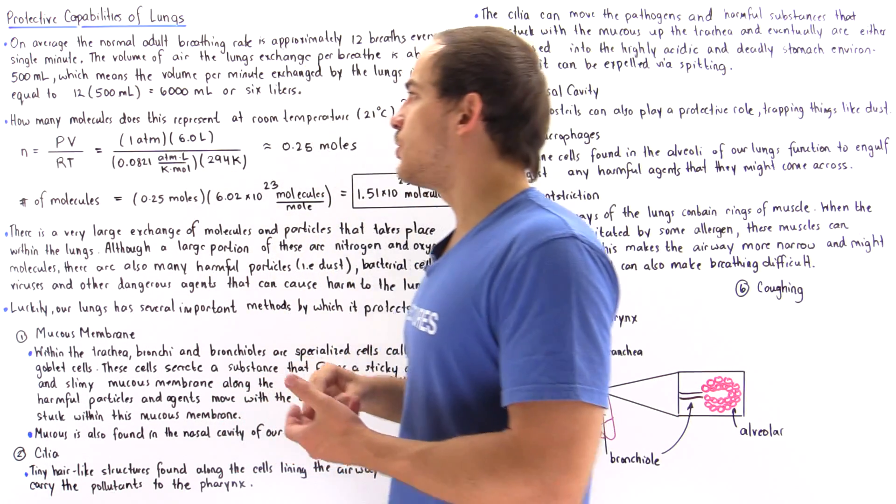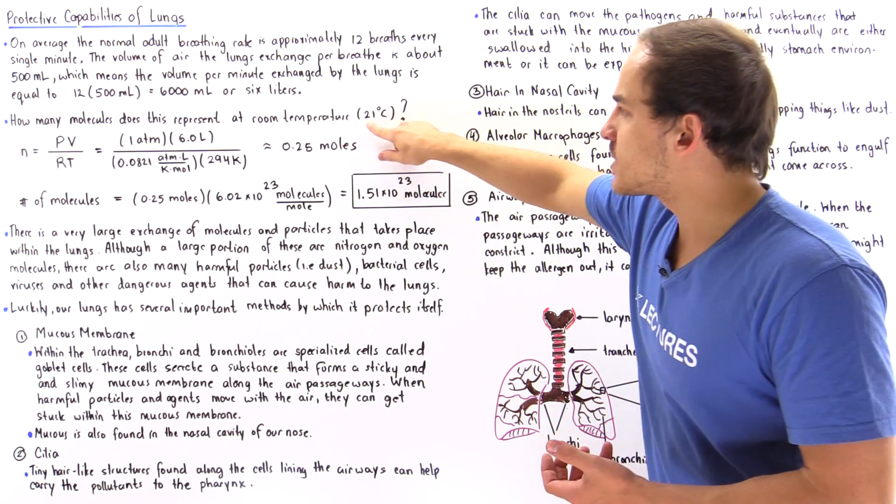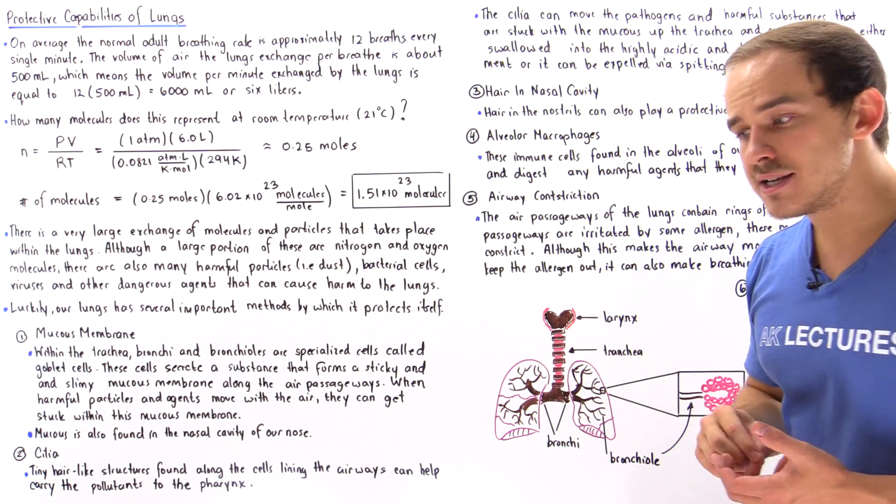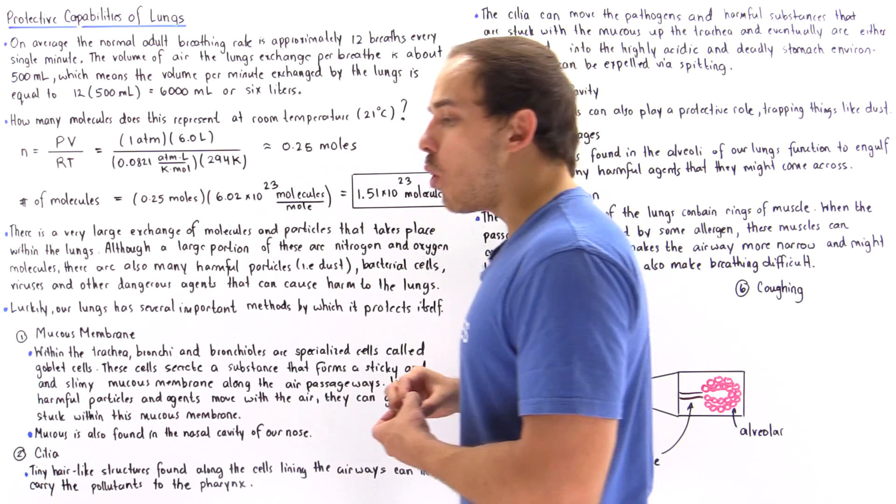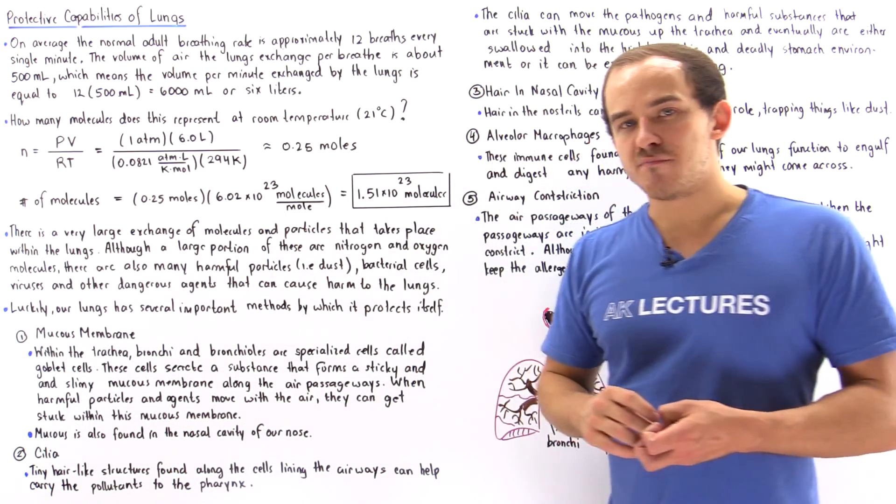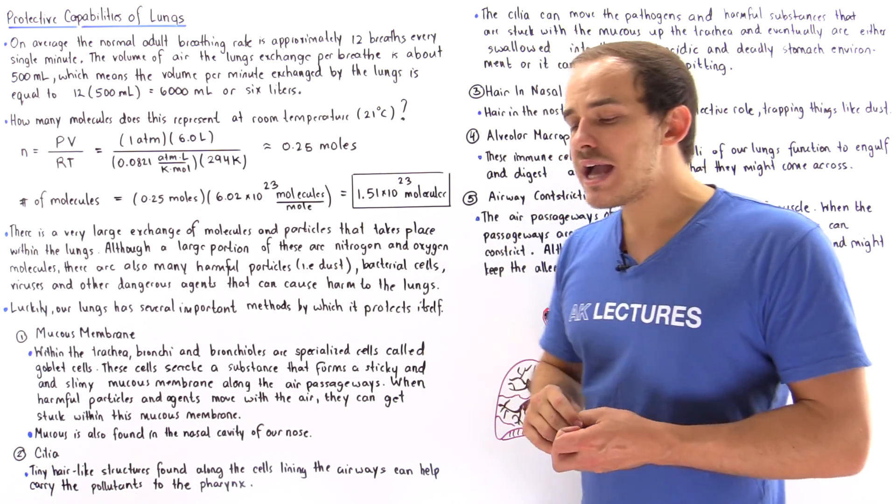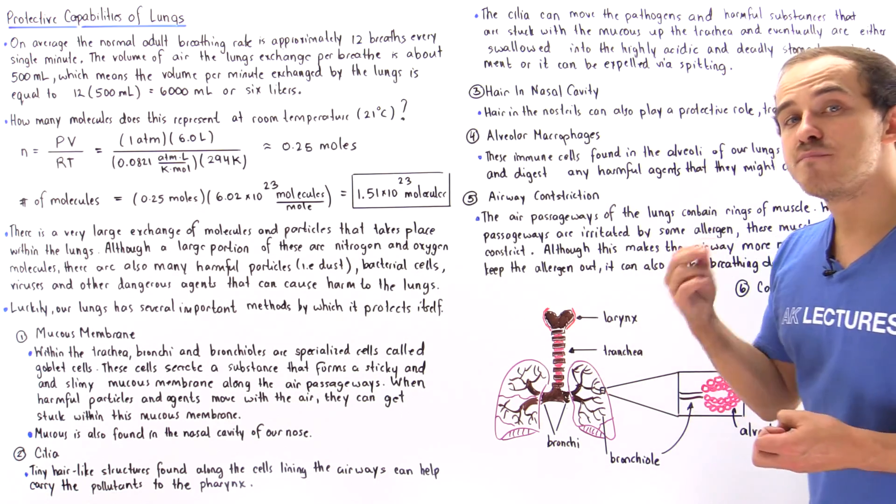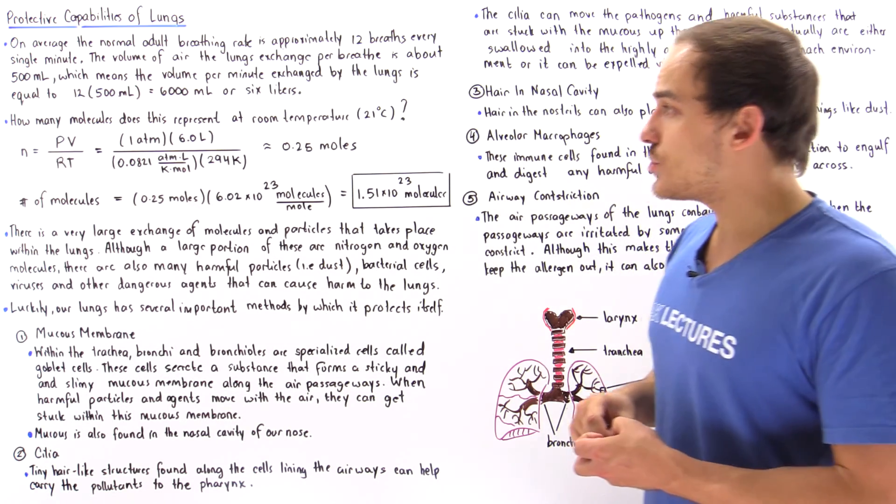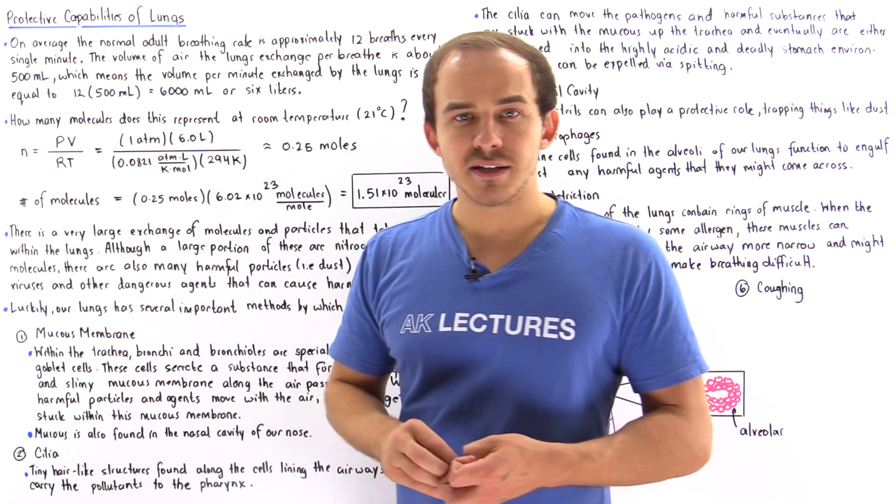How many molecules does this represent at room temperature, at a temperature of about 21 degrees Celsius and a pressure of about one atmosphere? To calculate the number of molecules exchanged by the lungs every single minute, we have to calculate the number of moles of air that is exchanged. To calculate the moles, we can use the ideal gas law.